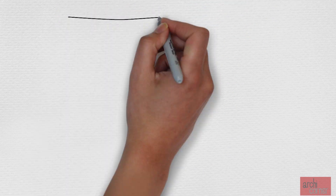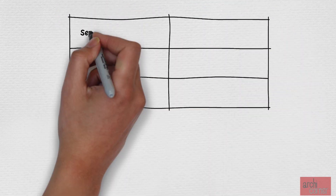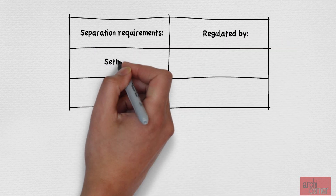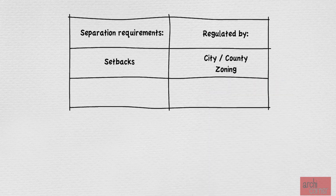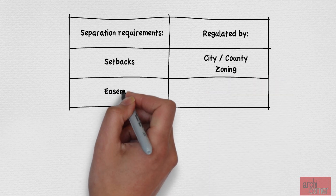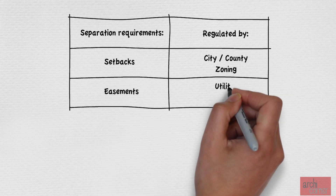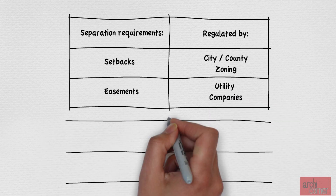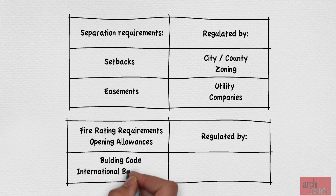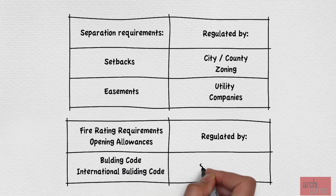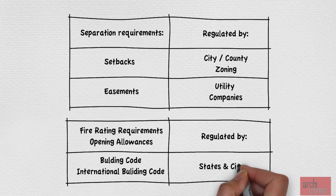I want to clarify that there are two different things that affect the separation required between buildings. The first are zoning setbacks — the zoning code changes from city to city and county to county. The second are easements, usually utility easements. A third item to consider is the building code. The International Building Code, or IBC, is the most widely used code in the entire United States, and other countries use it as well. However, even within the USA, each state and sometimes some cities have a modified version of the IBC.